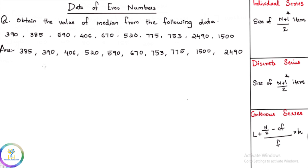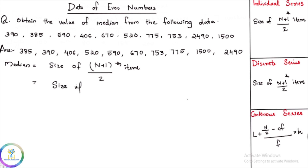Ascending order — we apply the equation. Median is equal to the size of (n+1)/2 th item. How many items are there? 1, 2, 3, 4, 5, 6, 7, 8, 9, 10 — 10 items. So (10+1)/2 th item, that is 11/2 th item, which equals the 5.5th item.